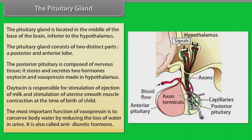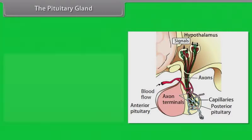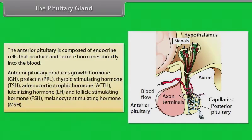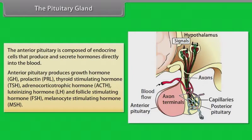The anterior pituitary is composed of endocrine cells that produce and secrete hormones directly into the blood. Anterior pituitary produces growth hormone (GH), prolactin (PRL), thyroid-stimulating hormone (TSH), adrenocorticotrophic hormone (ACTH), luteinizing hormone (LH), follicle-stimulating hormone (FSH), and melanocyte-stimulating hormone (MSH).